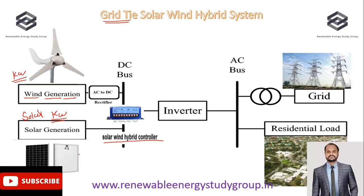The solar power plant generates electricity in terms of DC (direct current), which is fed into the solar wind hybrid controller. For most wind turbines, whether residential or utility-scale, they generate electricity in terms of AC (alternating current). This AC current is fed to a rectifier, which may be a built-in part of the hybrid controller or a separate unit, whose role is to convert AC supply from the wind machine into DC supply before feeding it to the hybrid controller.